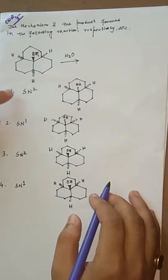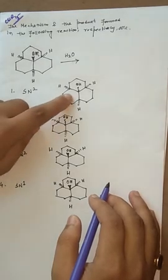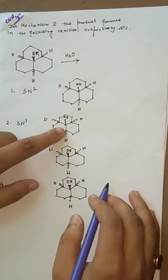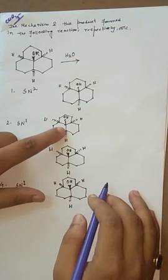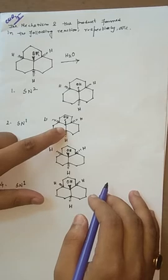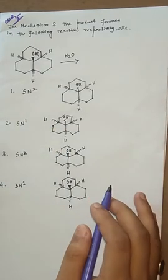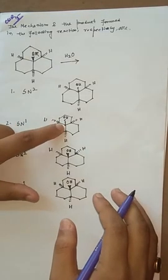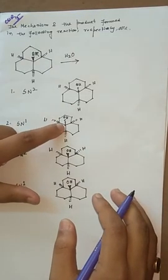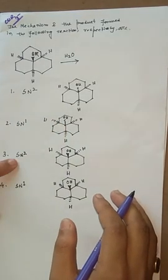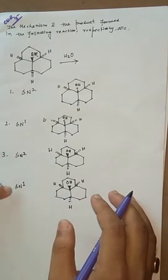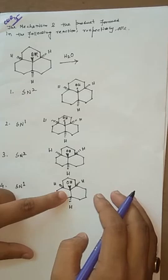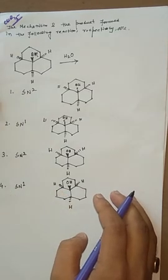For SN2 mechanism, which group is below the plane? And for SN1 mechanism, is the OH group above the plane or below the plane? Because in SN1 mechanism the nucleophile can attack above the plane or below the plane, so two products are possible. In SN2, the OH group is above the plane. I will try to sort out what are the possible products.